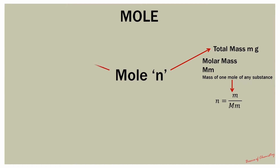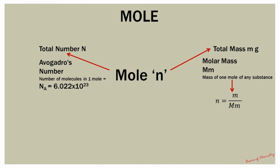Moles can also be related to number. If you know the total number of molecules present, you can divide it by Avogadro's number to obtain the number of moles. Avogadro's number is the number of entities present in one mole. The number of moles n equals uppercase N divided by Nₐ, the symbol for Avogadro's number. This is the second method to determine the value of n, or moles, from number.